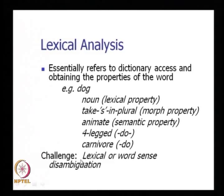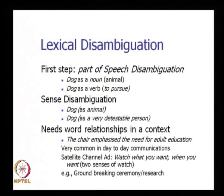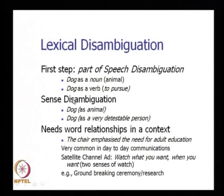Word sense disambiguation involves multiple steps. The first step is part-of-speech disambiguation. For example, 'dog' as a noun is an animal, and 'dog' as a verb means to pursue or run after. One could say 'wherever Ram went, misfortune dogged him' — meaning misfortune followed him. The word sense disambiguation problem comes after part-of-speech disambiguation is resolved. When we have decided that 'dog' is a noun, the next question is: is it an animal, or does it mean a very detestable person — one of the senses of dog.